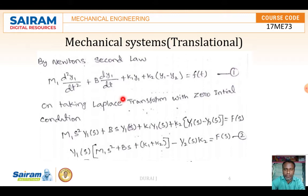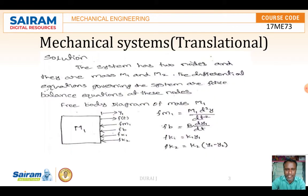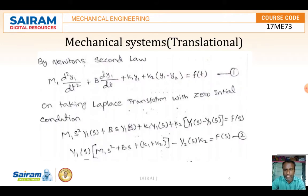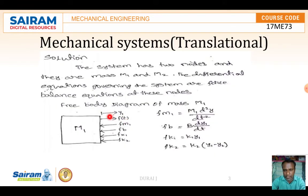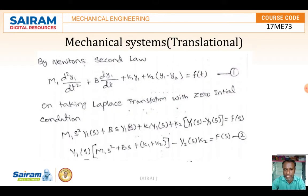Applying Newton's second law for M1: M1·(d²y1/dt²) + B·(dy1/dt) + K1·y1 + K2·(y1 - y2) = F(t). The sum of resisting forces equals the sum of external forces.